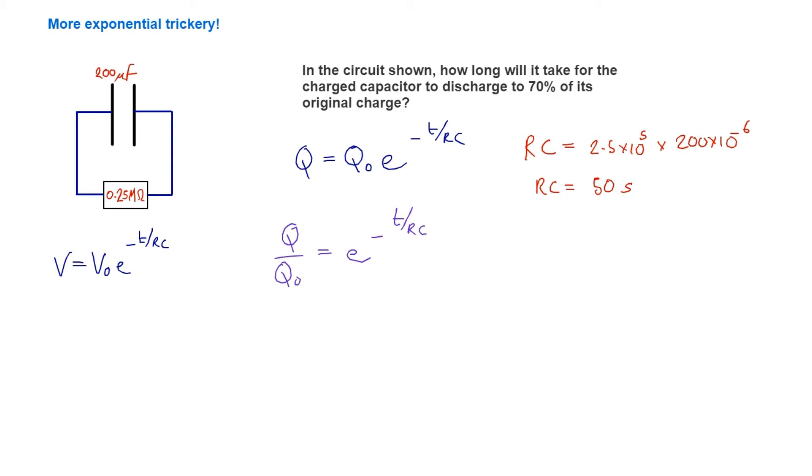Then we can just write down 0.7 = e^(-t/RC). And of course, we know RC,